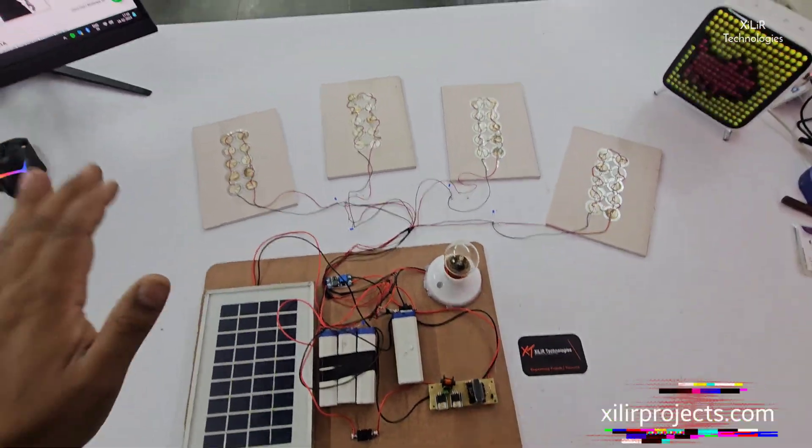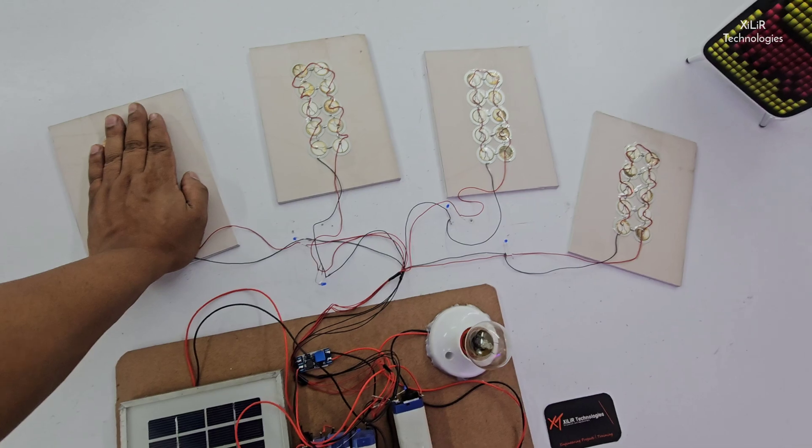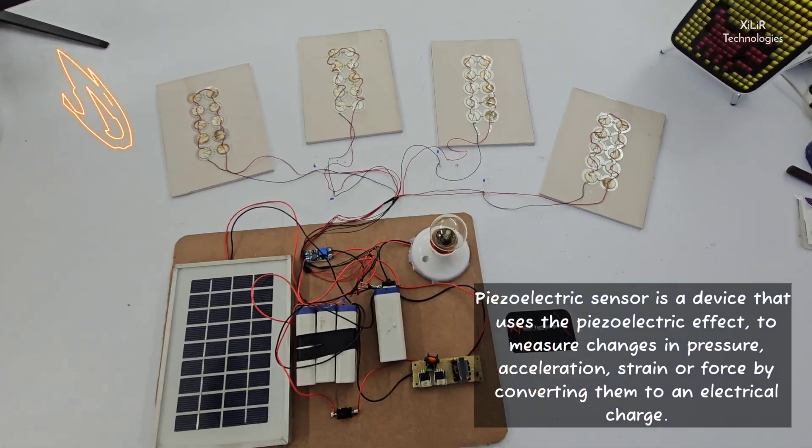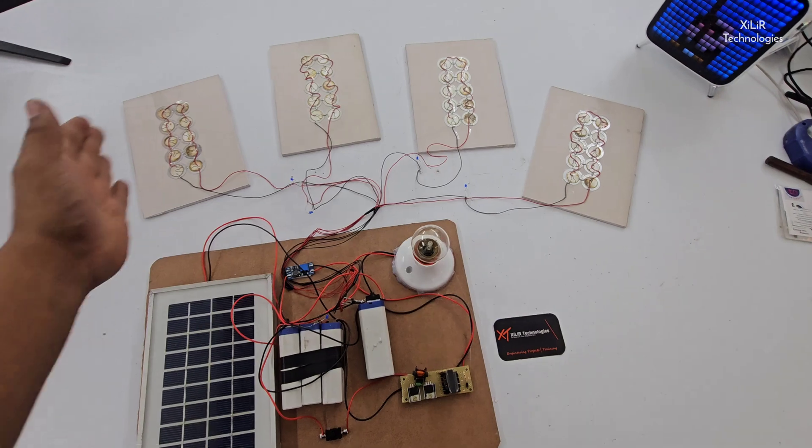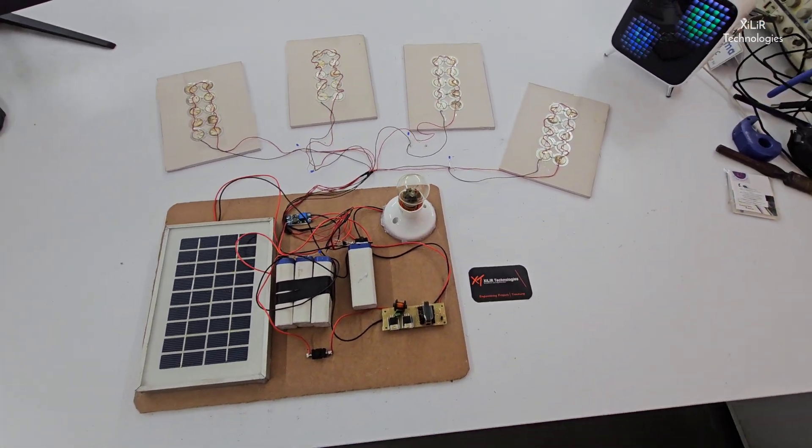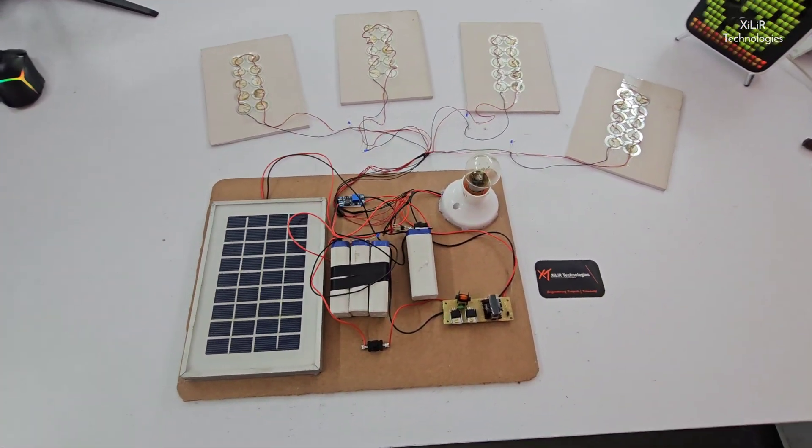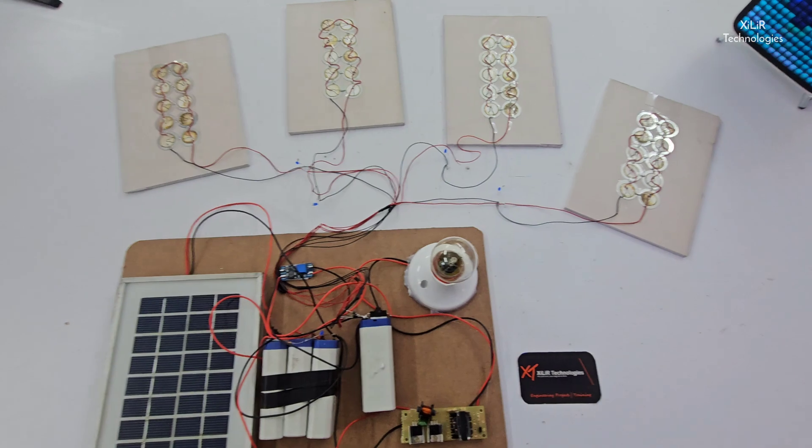So when we put a step on this, this will convert that mechanical energy to electrical and will charge this battery. This battery is 4 volts and we are generating power of around 6 volts. So it will be charging this 4 volt battery.